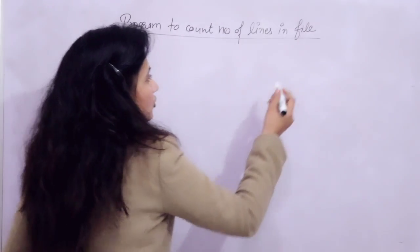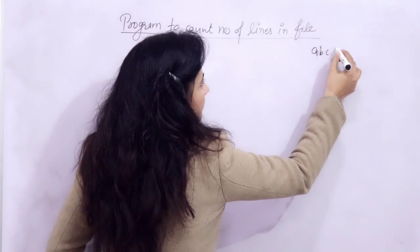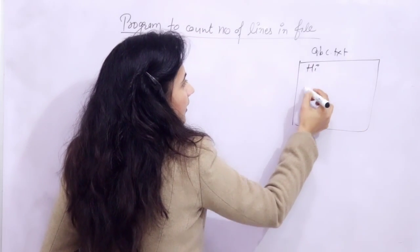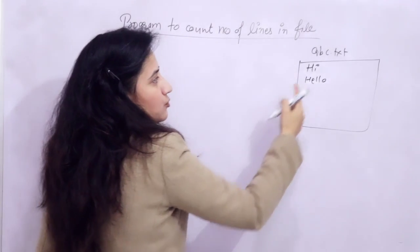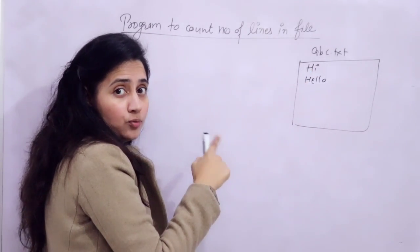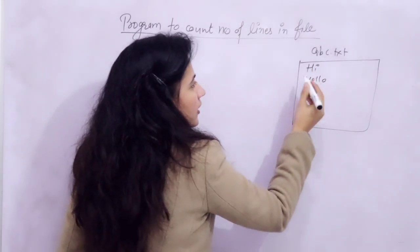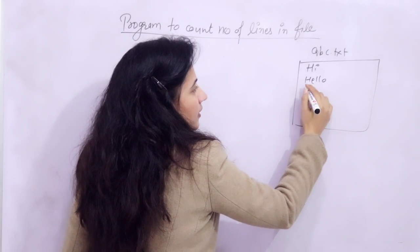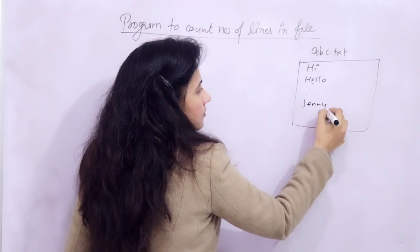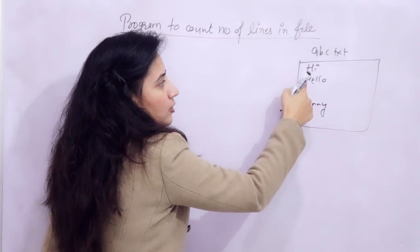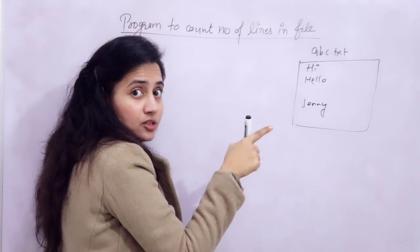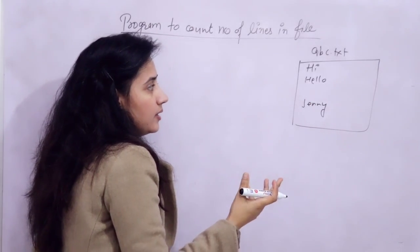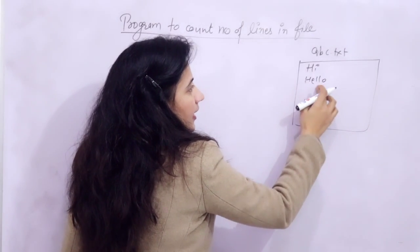Suppose I have a file named abc.txt. In this file I have 'hi' then 'hello' — so there are two lines and the output should be 2. Now suppose I have 'hi', 'hello', then a newline with nothing on that line, then 'Jenny' — so we have lines 1, 2, 3, and 4. It should give 4.